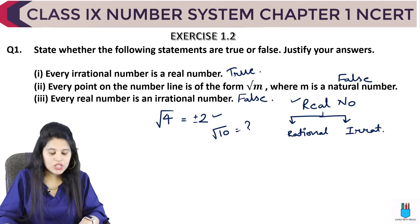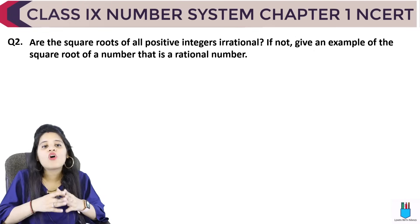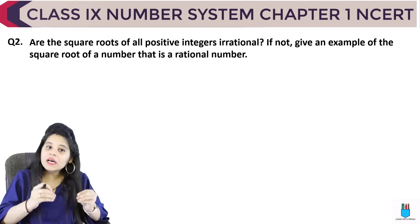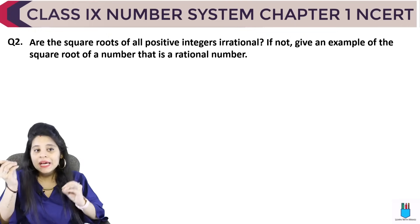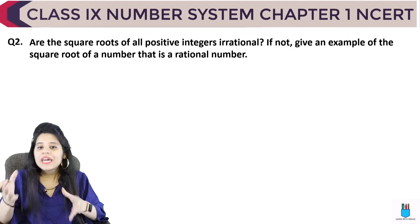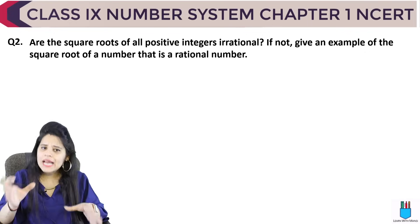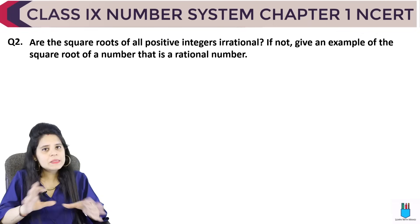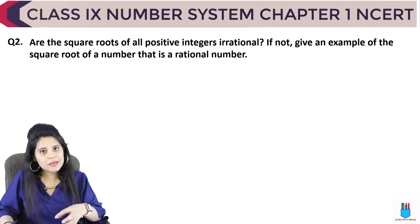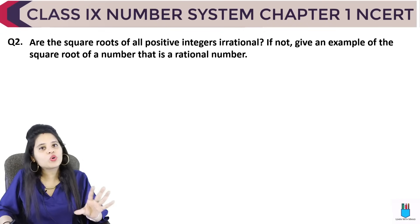So that is question number 1. The next question: are the square roots of all positive integers irrational? If not, give an example of the square root of a number that is a rational number. If you can find any exception and give an example, you have proved it.